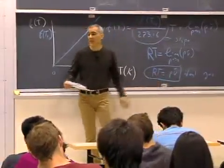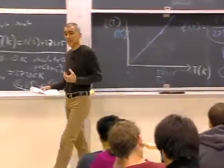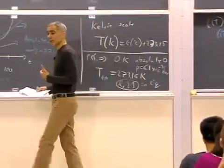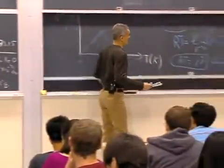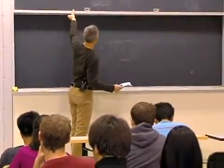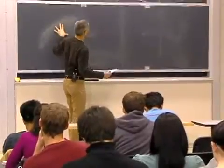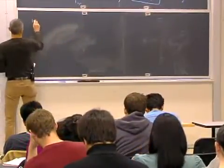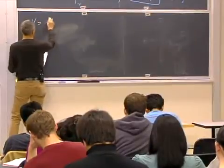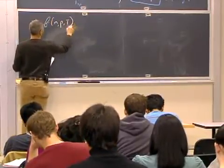If you remember, we said that if you had a substance, if you knew the number of moles and two properties, you knew everything about the gas. Which means that you can rewrite this in the form volume, for instance, is equal to a function of n, p, t.